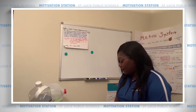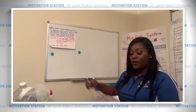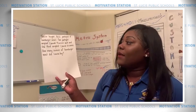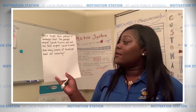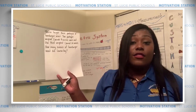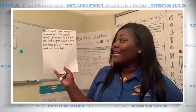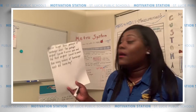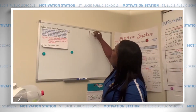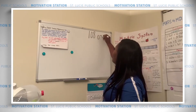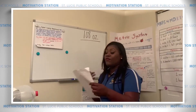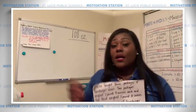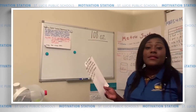Let's take a look at the problem from last time. It says: Louisa bought three packages of hamburger meat. Two packages weighed two pounds nine ounces each, and the third weighed one pound ten ounces. How many ounces of hamburger meat did Louisa buy? The answer is 108 ounces. I converted each hamburger package to ounces using a two-column table, then added them all up to get the total.